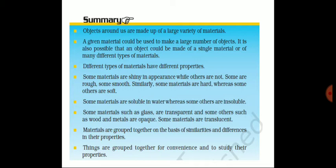Different types of materials have different properties. Some materials are shiny in appearance while others are not. Some are rough and some smooth. Materials are classified as hard or soft — sponge and cotton can be easily compressed, so they are soft, while metal keys and coins cannot be compressed, so they are hard. Some materials are soluble — sugar dissolves completely in water, so it is soluble. But sawdust won't dissolve, so it is insoluble. Some materials like glass are transparent, others such as wood and metals are opaque, and some materials are translucent.